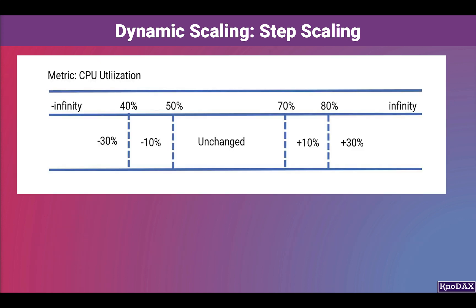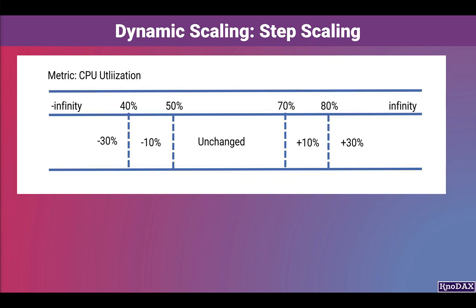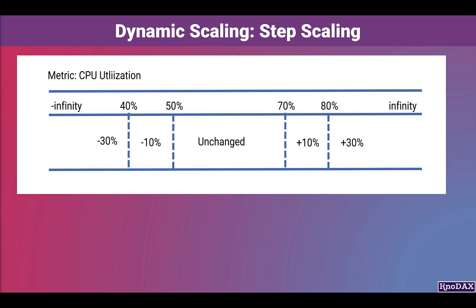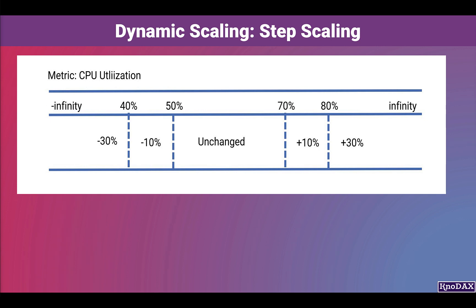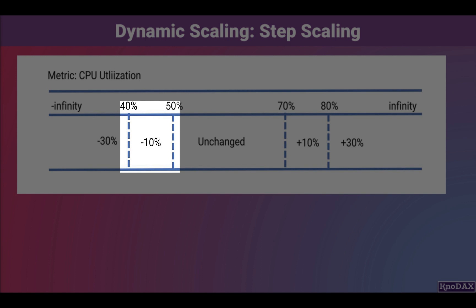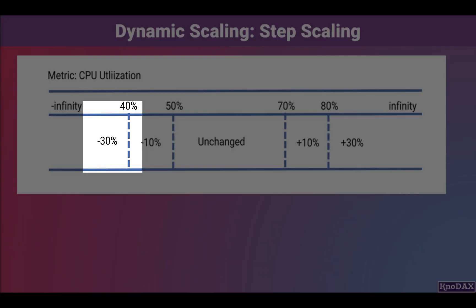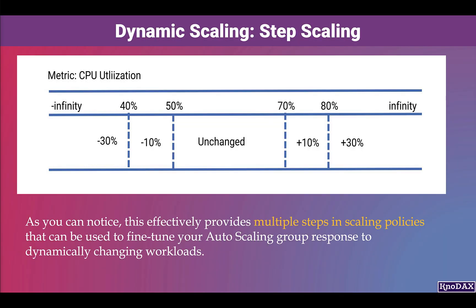Let's understand step scaling with an example. The auto scaling group maintains its capacity when CPU utilization is between 50% and 70%. When CPU utilization is greater than or equal to 70% but less than 80%, the auto scaling group increases its capacity by adding 10% more. When utilization is greater than 80%, capacity is increased by an additional 30%. On the other hand, when CPU utilization is less than or equal to 50% but greater than 40%, the auto scaling group decreases capacity by 10%. If utilization further goes below 40%, the auto scaling group removes 30% of current capacity. This effectively provides multiple steps in scaling policies to fine-tune your auto scaling group response to dynamically changing workloads.